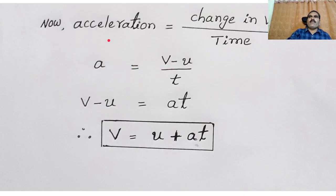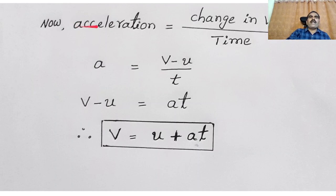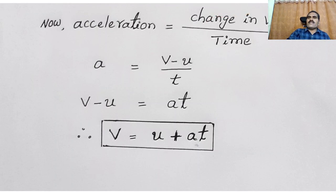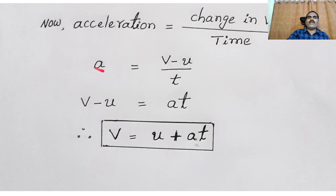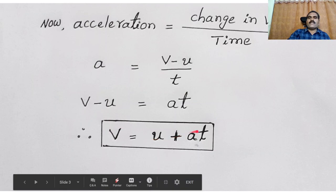We previously discussed acceleration. According to the definition, the rate of change of velocity is called acceleration, or the change in velocity per unit time. So acceleration A equals the change in velocity, which is V minus U, divided by time T. By cross-multiplying, V minus U equals AT. Therefore, V equals U plus AT.